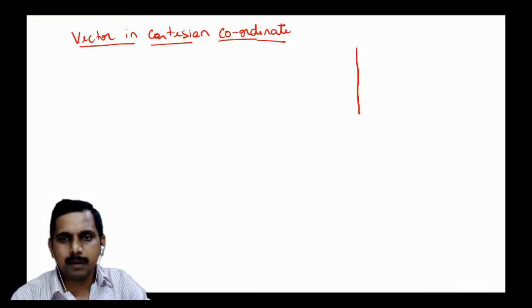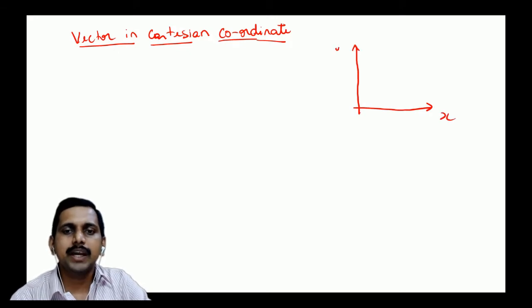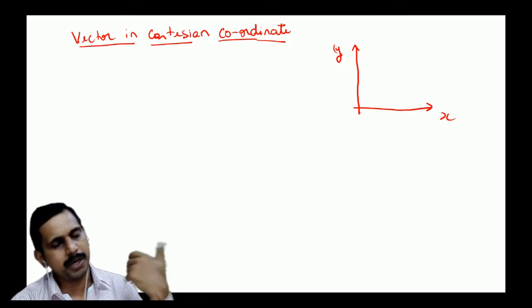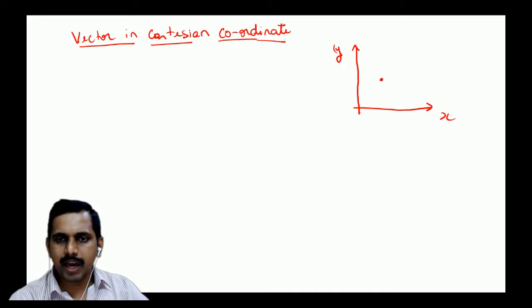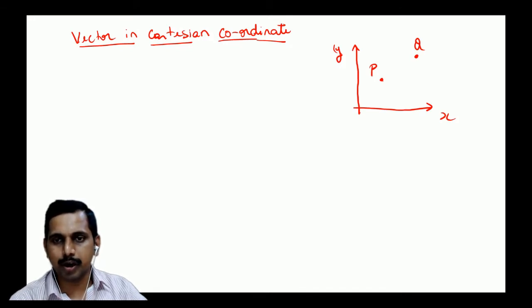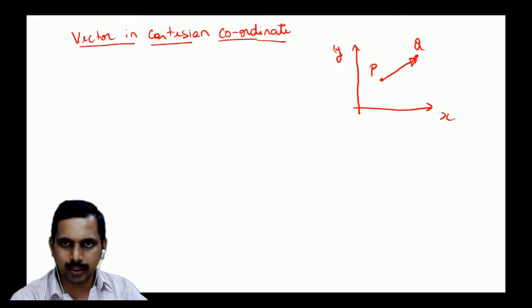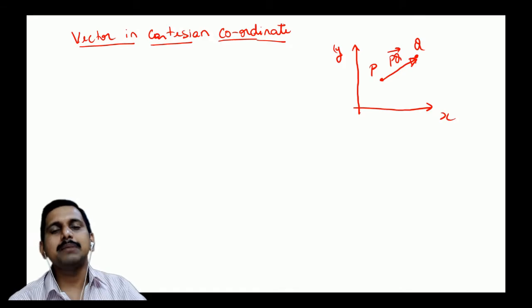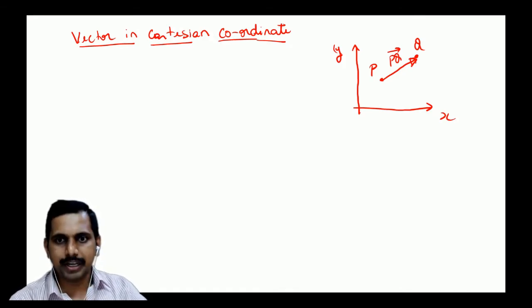If we have two points p and q in space, we can join them with a vector, calling it vector v or pq. The coordinates can represent velocity, acceleration, force, enthalpy, entropy — anything. The vector has both a magnitude and a direction.